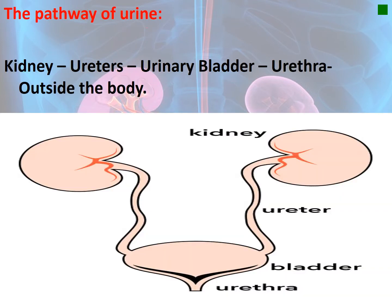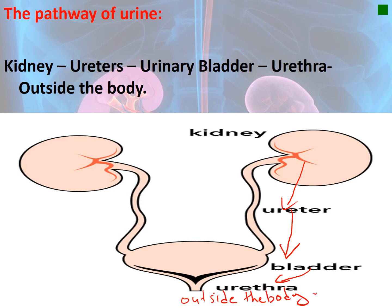The pathway of urine inside the body: it starts in the kidneys, then passes through the ureters, then toward the urinary bladder where it is stored, then to the urethra, and finally outside the body.